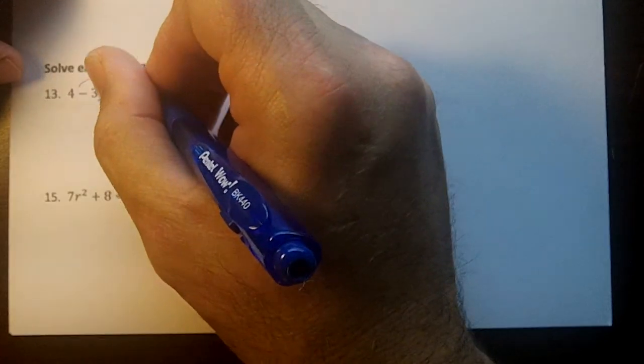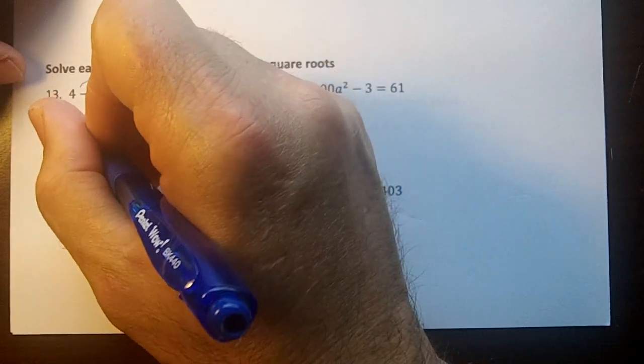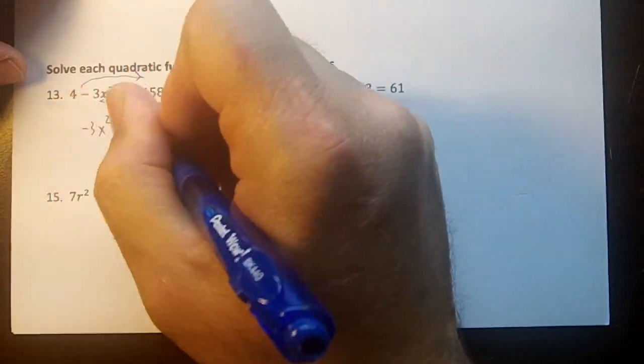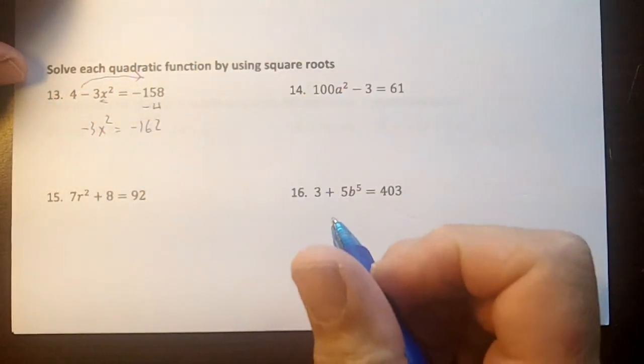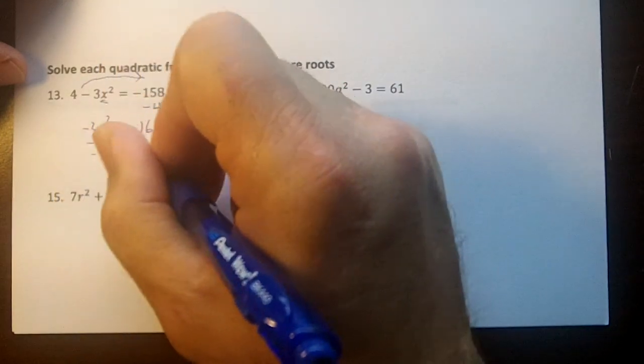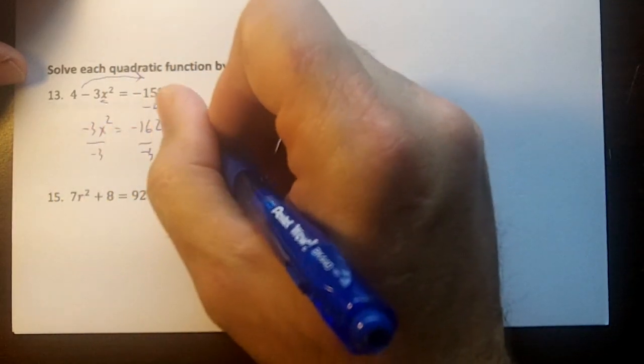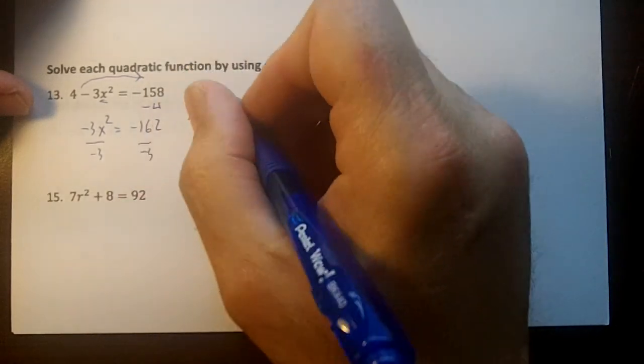So we're going to move over the 4, subtract 4. That's going to give me negative 3x squared equals negative 162. Then I'm going to divide by negative 3, and I'm going to get x squared equals 54.